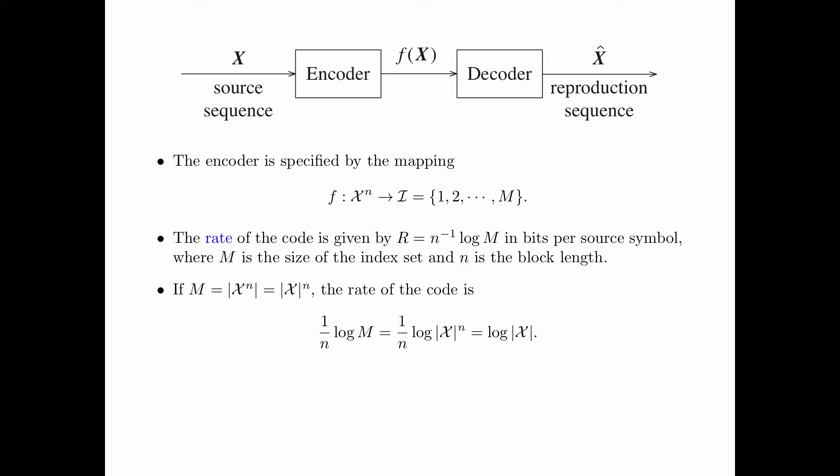If m, the size of the index set, is equal to the number of all possible sequences, which is equal to the size of the alphabet to the power n, then the rate of the code equals (1/n) log m = (1/n) log |alphabet|^n = log |alphabet|. Typically, we take the rate to be strictly less than log |alphabet| for data compression.